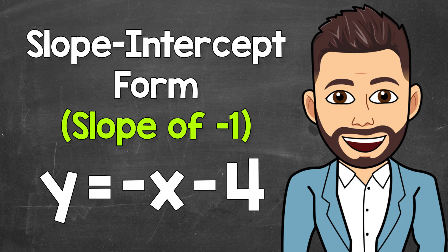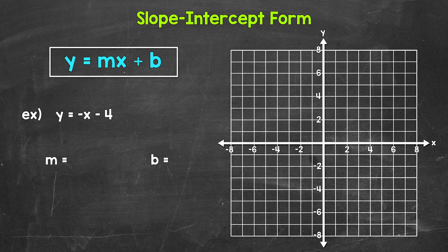Welcome to Math with Mr. J. In this video, I'm going to cover how to graph a line in slope-intercept form with a slope of negative one. For our example, we have y equals negative x minus four. So we need to figure out our slope and y-intercept here.